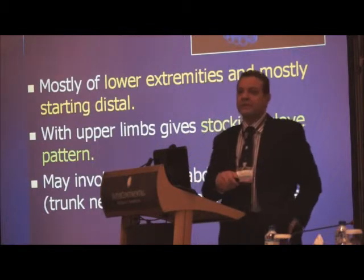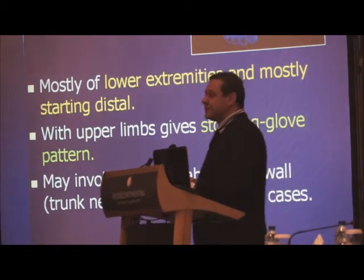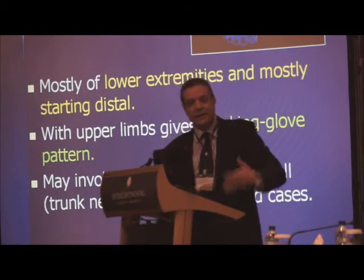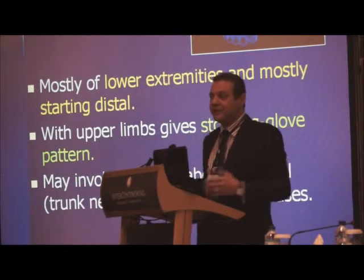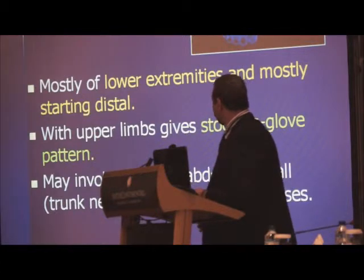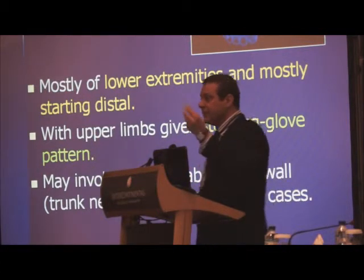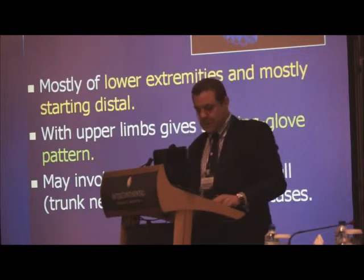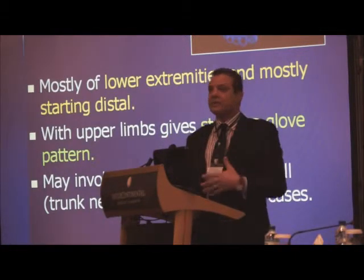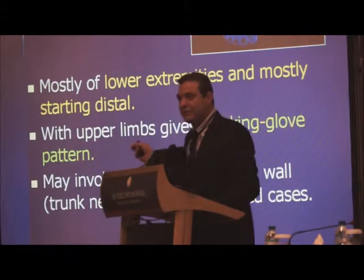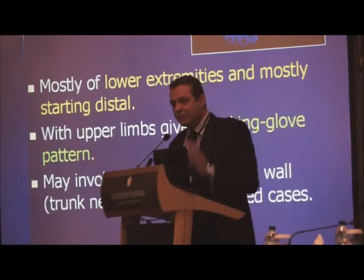How does it start? Usually in the lower limbs, and usually starting at the distal parts. When a patient comes with burning pain from the toes that gradually extends up to the leg then the lower half of the thigh, this is a typical description of peripheral neuropathy. When we have it with the upper limbs, everyone remembers glove and stocking distribution, and it may involve the anterior abdominal wall. In internal medicine you might see a case with truncal or abdominal pain of unknown reason — sometimes metabolic neuropathy is the reason, and in some cases we might underdiagnose it.